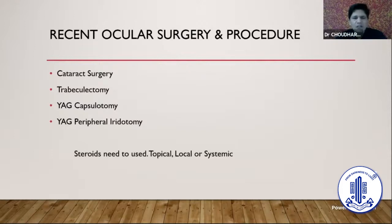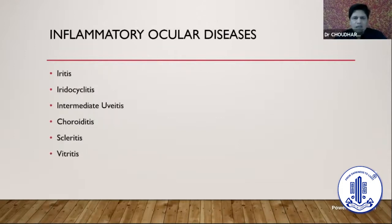Steroids may be added in any form — topical drops, local in the form of posterior sub-Tenon or subconjunctival injection, or sometimes systemic steroids. Always go back and thoroughly examine your patient for coexisting inflammatory conditions like iritis, iridocyclitis, intermediate uveitis, choroiditis, and scleritis — anterior or posterior. If vitritis is present, it will keep increasing the DME and make our conventional treatment ineffective.